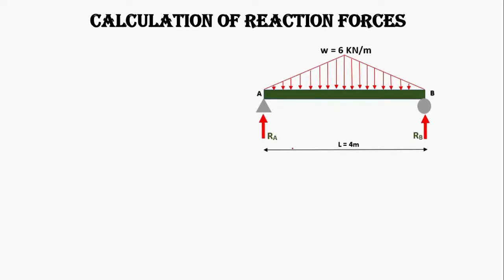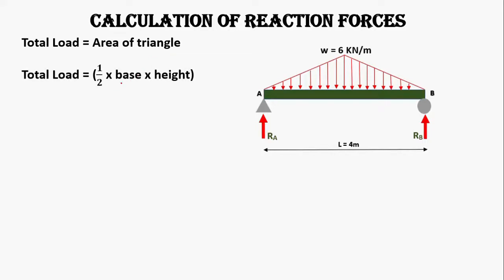Here you can see we have a beam of 4 meter length with 6 kilonewton per meter load uniformly increasing towards the center of the beam in the form of a triangular shape. First we will calculate the total load acting on the beam. Since we have a load in triangular form, we will use the area of a triangle, which is half base into height, where the base is the length and height is 6 kilonewton per meter.